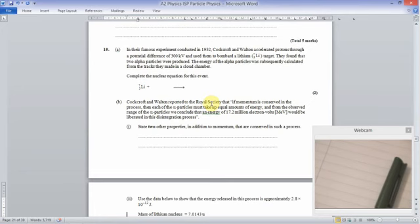Question 19 is talking about a famous experiment that was done by Cockroft and Walton, where they accelerated protons through a potential difference of 300 kilovolts. So it's got 300 kiloelectron volts of energy. They found that two alpha particles were produced. The energy of the alpha particles was subsequently calculated from the tracks they made in a cloud chamber. Complete the nuclear equation for this event.